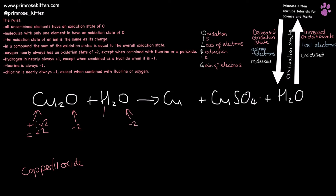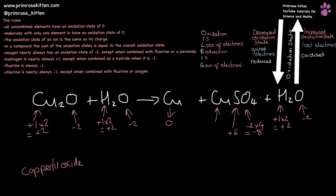Oxygen minus two, hydrogen plus one times two equals an overall contribution of plus two. Copper on its own here is going to be zero. Oxygen over here is minus two. Hydrogen is plus one; there are two of them giving a total contribution of plus two. Oxygen is minus two; there are four of them giving a total contribution of minus eight. The sulphate ion has a total overall charge of minus two, so the sulphate here needs to be plus six, giving this copper a plus two oxidation state.